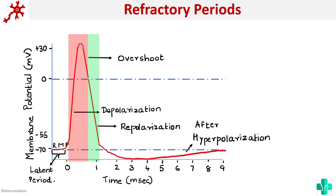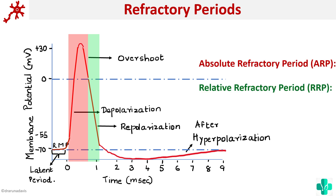The next type is the relative refractory period. During this time, if a stimulus of greater intensity is given, a second action potential may be fired. The catch is that the stimulus must be above the threshold — only then will the nerve fiber respond. So we have two types of refractory periods: absolute refractory period and relative refractory period.